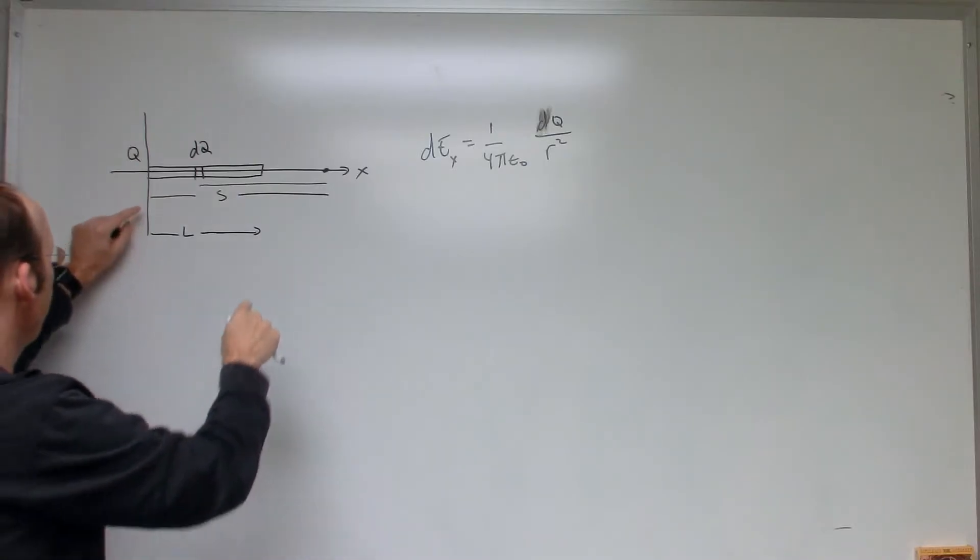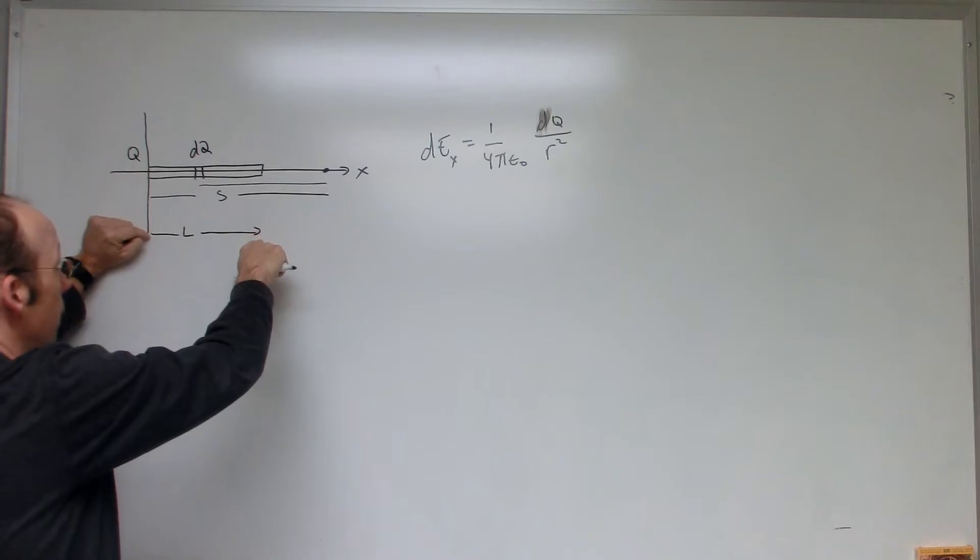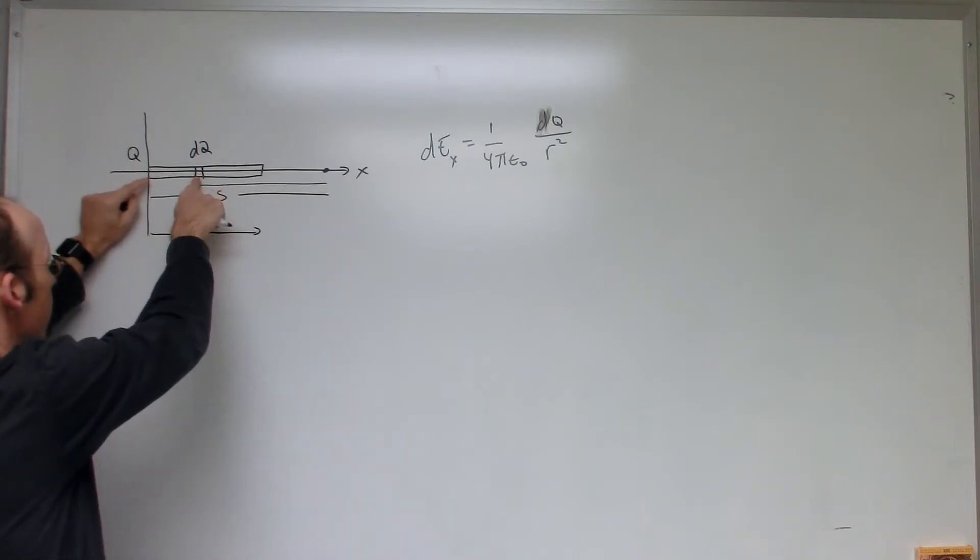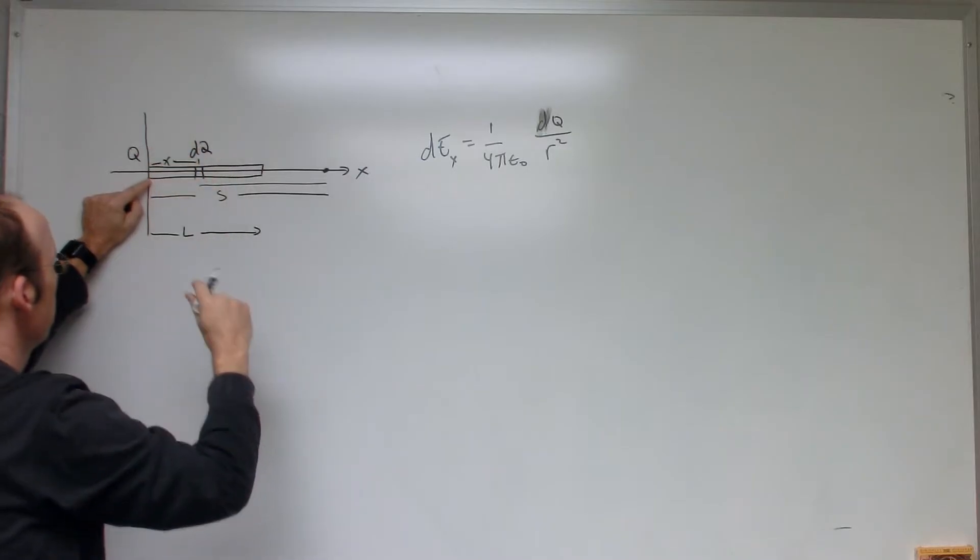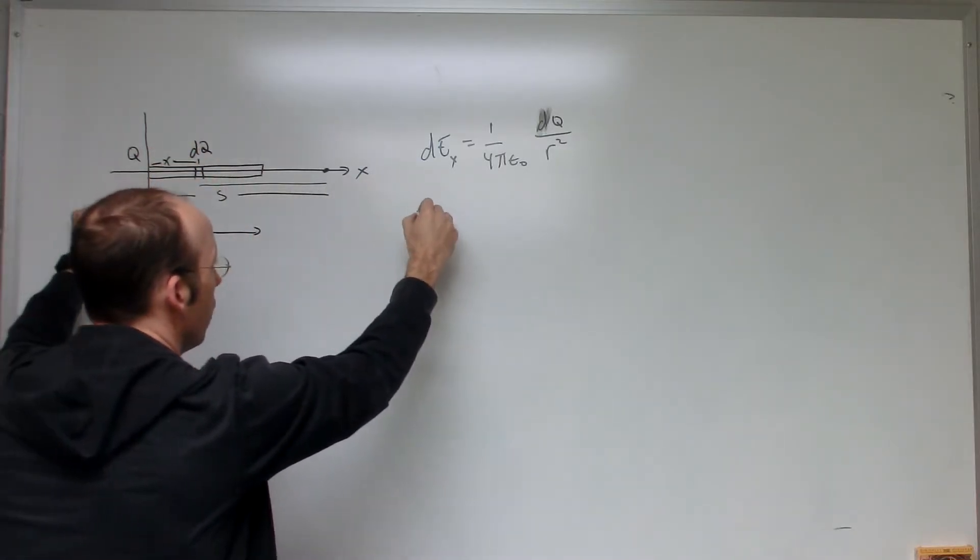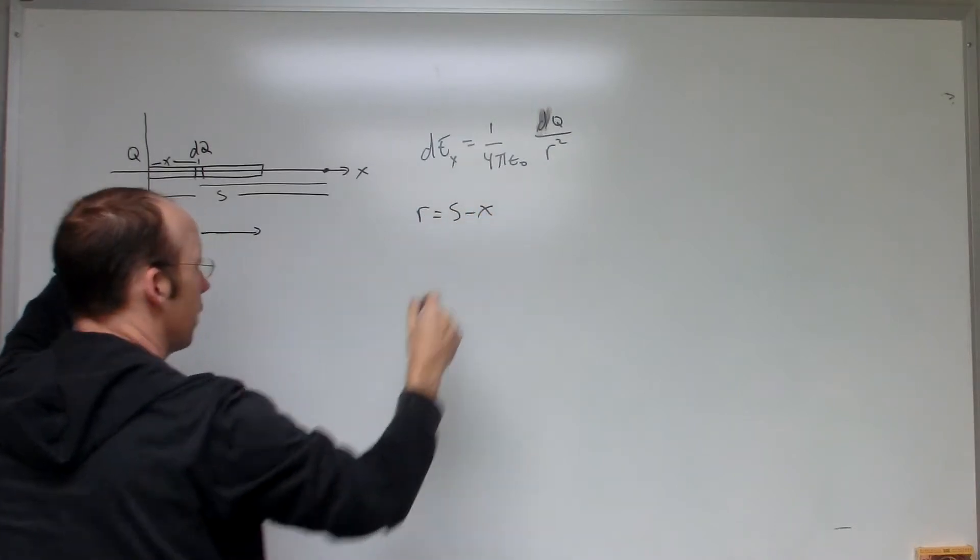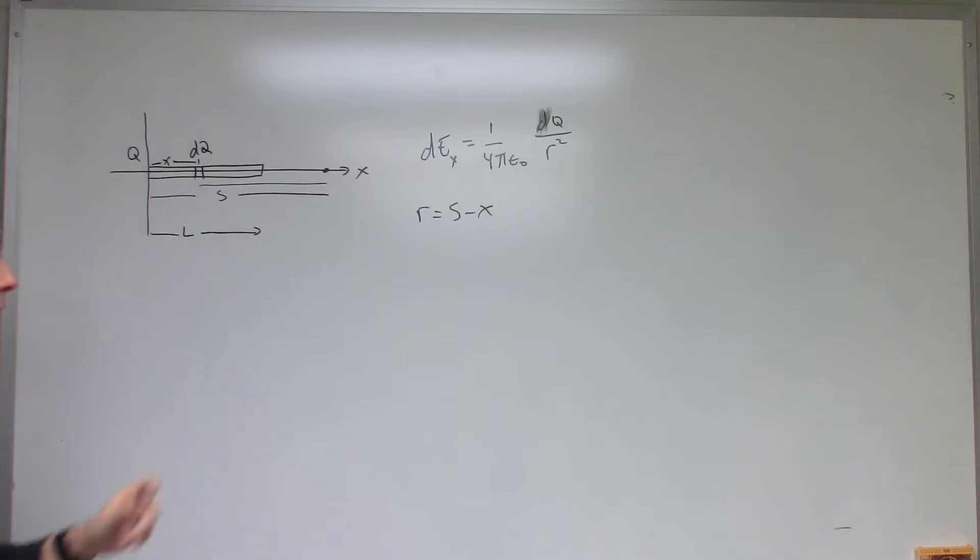So right there, you can see if S is the distance along the X axis, and L is the length, this piece is going to be at a distance of X. So, R, L doesn't matter, L is wrong. R is going to be equal to S minus X. Because I'm going to integrate over X, not R, so I'm going to need to make that substitution.